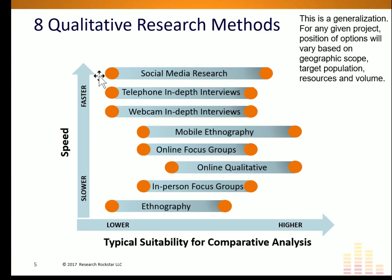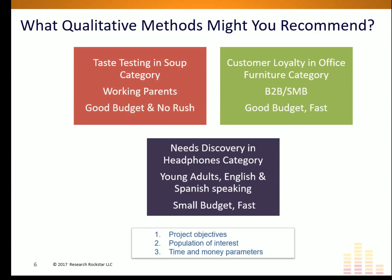Now that we've talked about some of these emerging methodologies, let's take a look at our sample projects again. Taste testing — we said traditional focus groups. But now, what could we do? I might want to send out those soup samples to people I've recruited from across the country, get some real geographic and demographic mix, and then do webcam interviews — have them sample the soup while I'm watching them. That's an awesome way to gather very rich, candid feedback. And of course, with the participant's permission, being able to use clips from those videos to create a montage is a very powerful way to show your client the results with a great deal of authenticity.